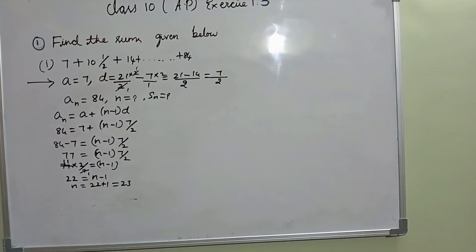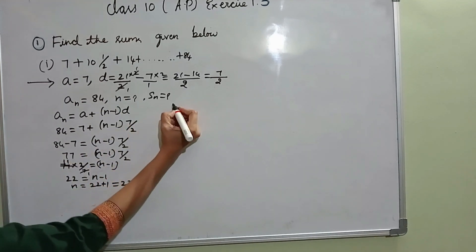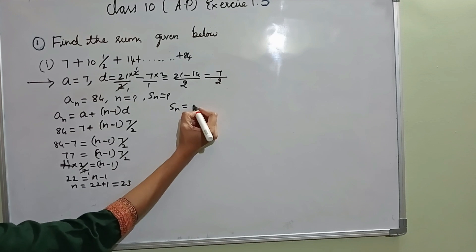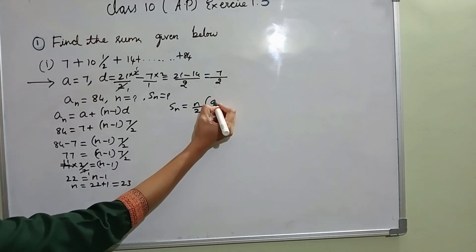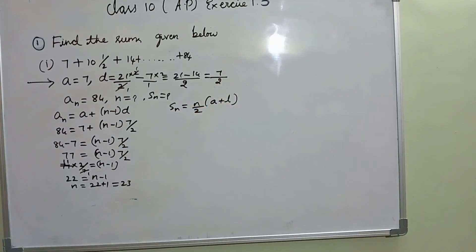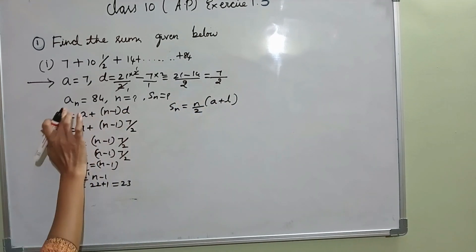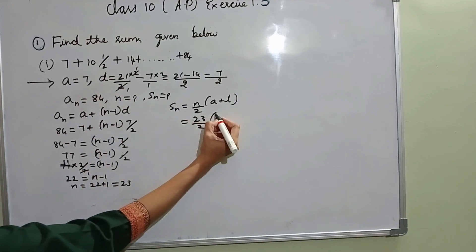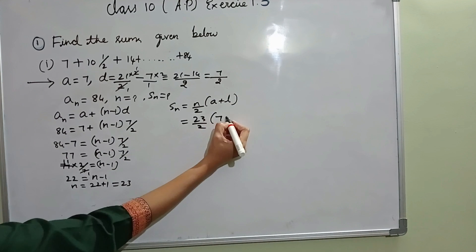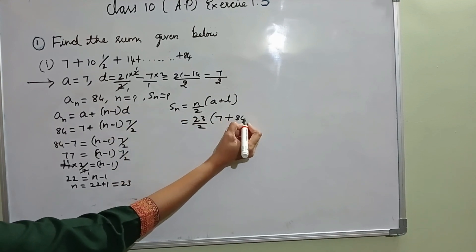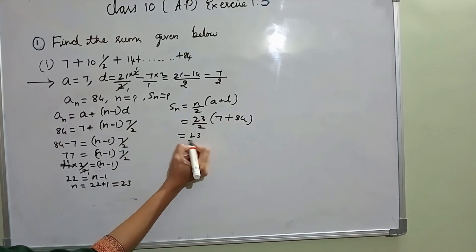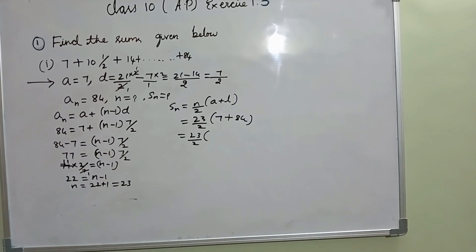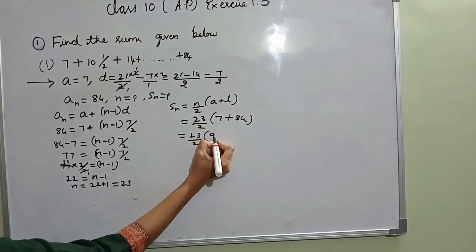Now I know the N value, so I can directly find the SN value. SN equal to N by 2 into A plus L. I can apply this formula since I know the last term. N is 23 by 2. A is 7, L is 84. So 23 by 2 into 84 plus 7 is 91.